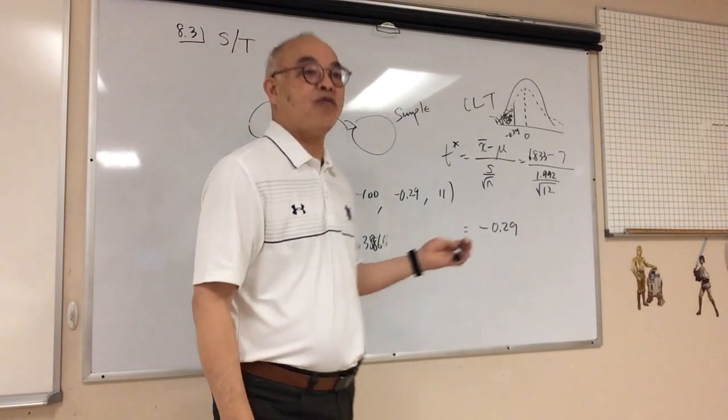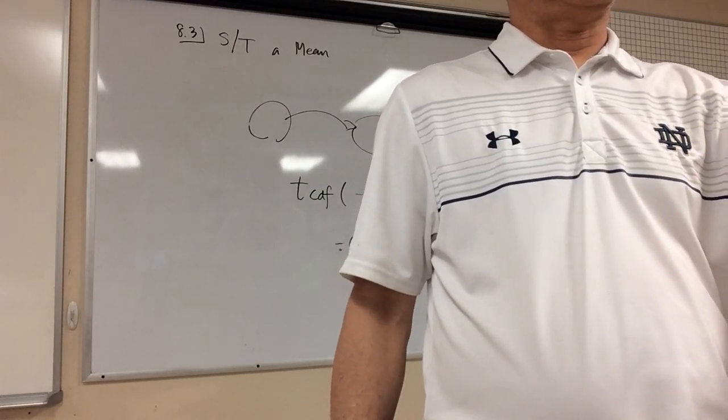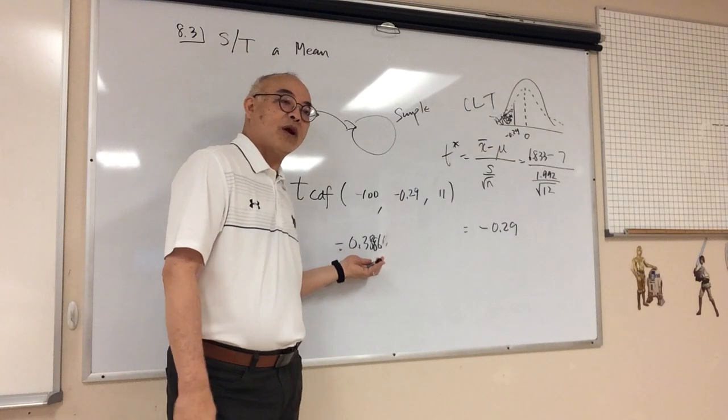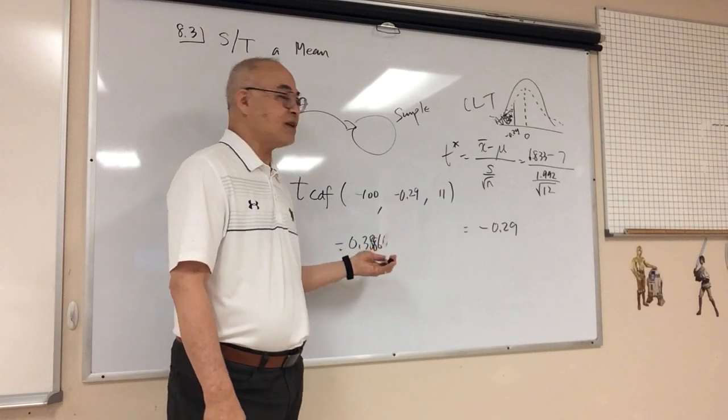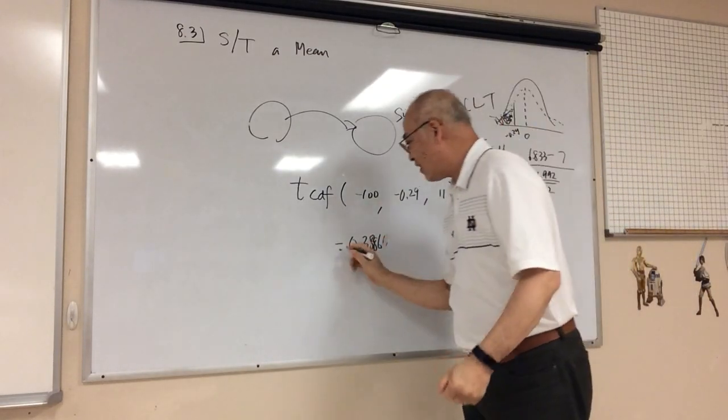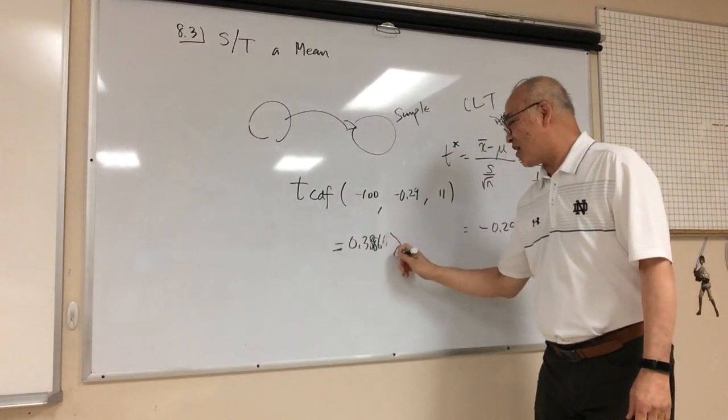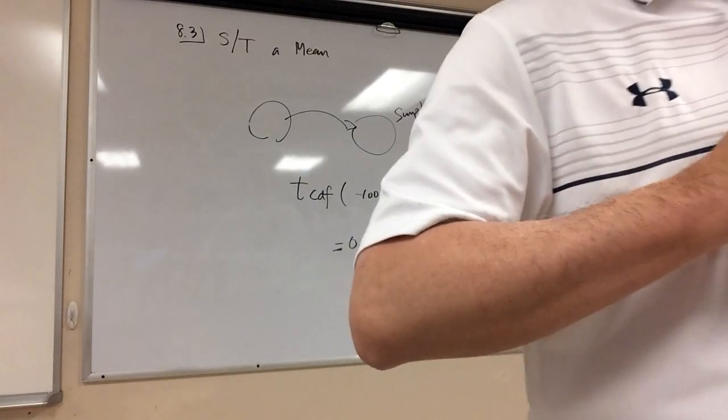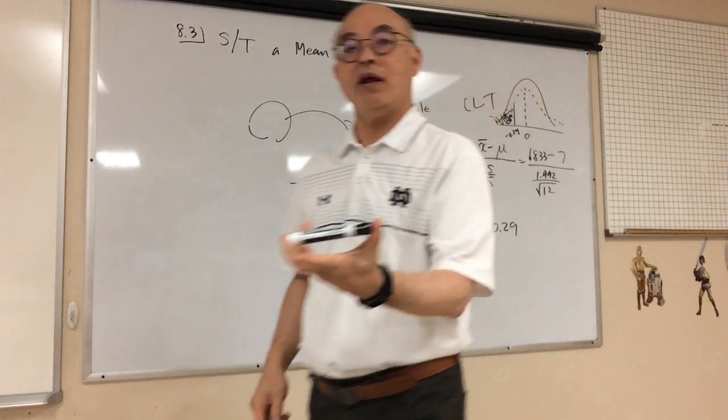So my p-value is this. Therefore, I get to do what? Is it greater than alpha or less than alpha? What's alpha? 0.05. 5%, right? So this is greater than alpha, correct? This is greater than 0.05. P-value is greater than alpha. Therefore, I do not get to reject the null hypothesis. I failed to reject the null hypothesis. So it's no good, right?